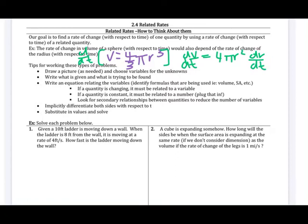If you're told a house is a certain height and that height doesn't change, you can use it as a number throughout the problem. Also, look for secondary relationships between quantities to reduce the number of variables — ideally the fewest variables possible in the final equation. Then implicitly differentiate both sides of the equation with respect to t for time, substitute in known values at that instant, and solve for what you need.